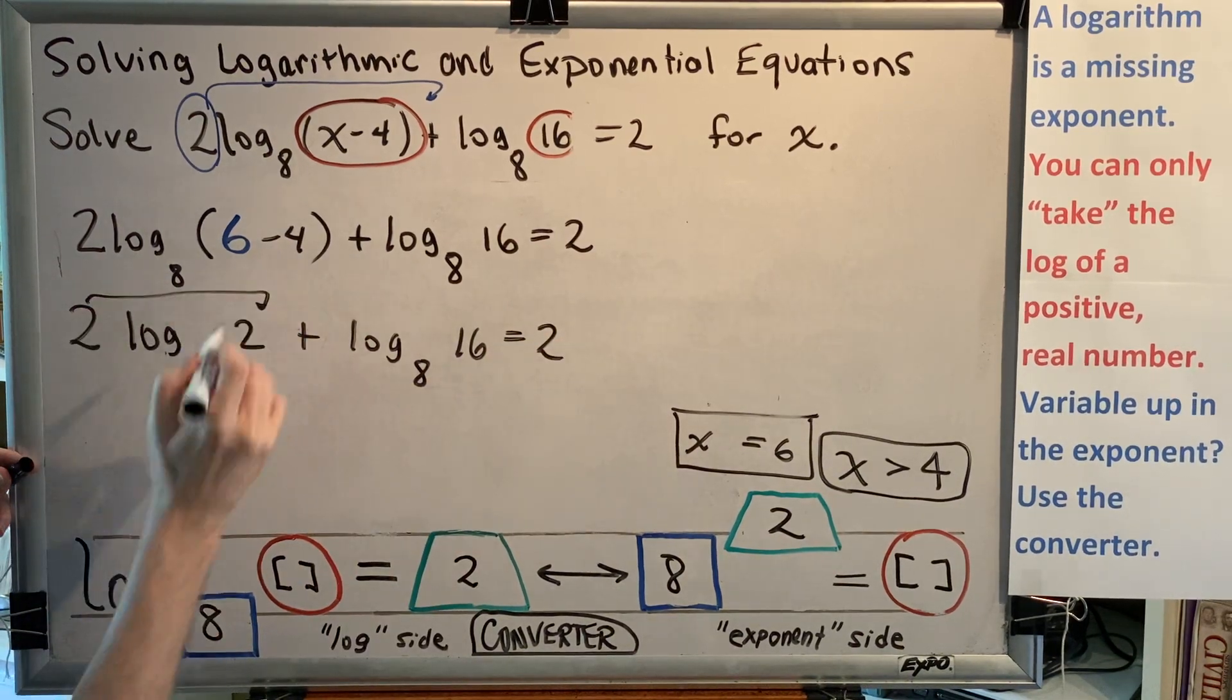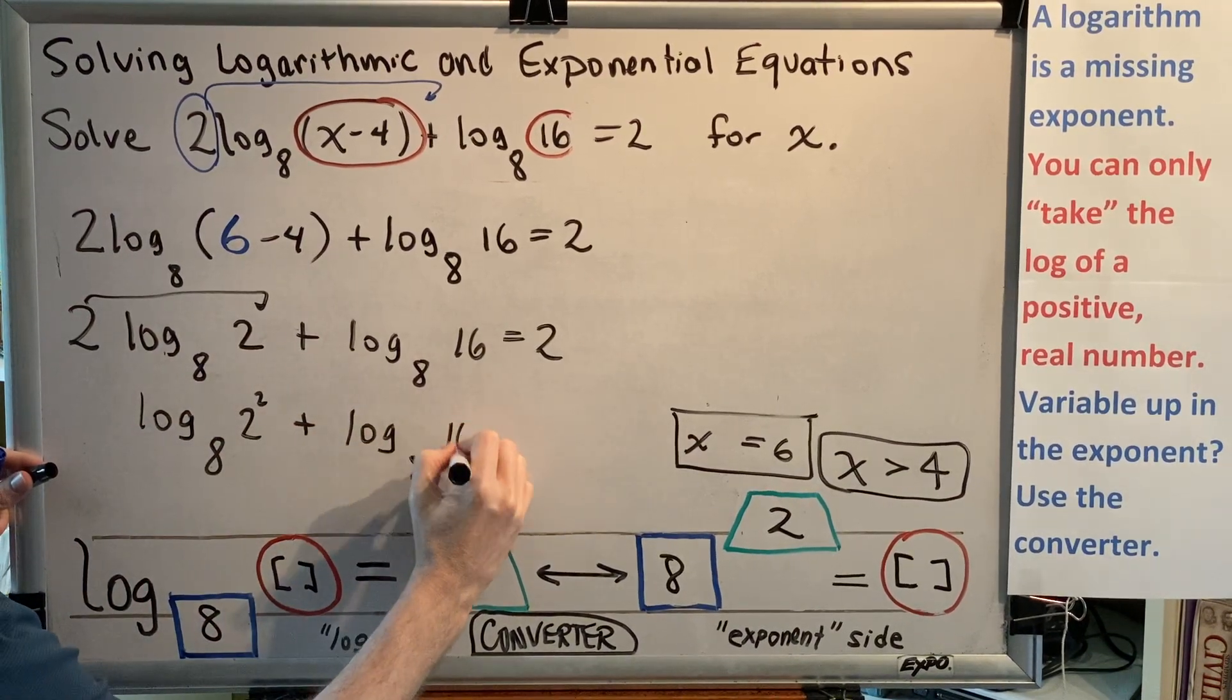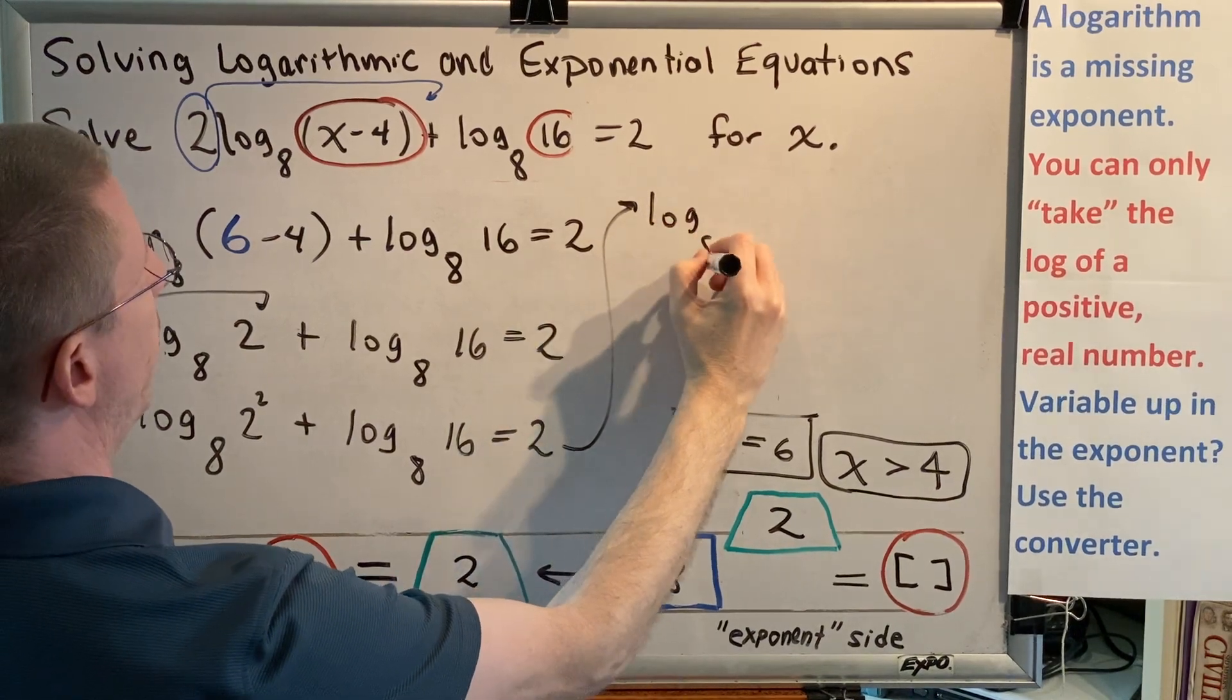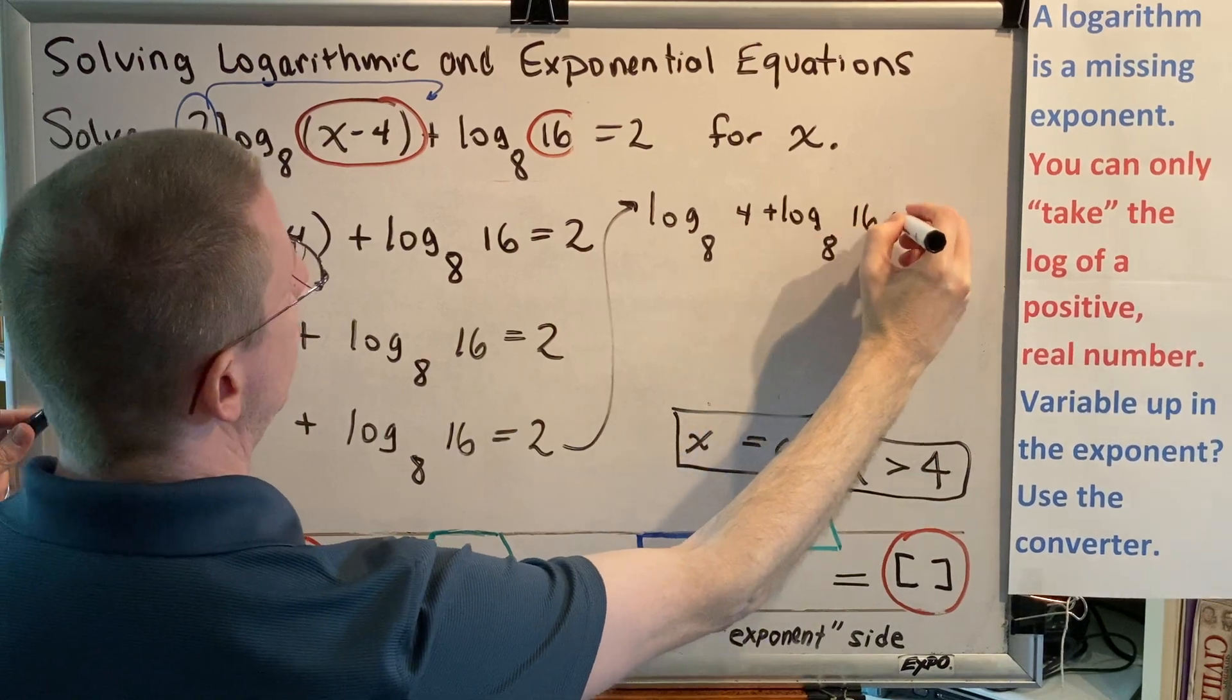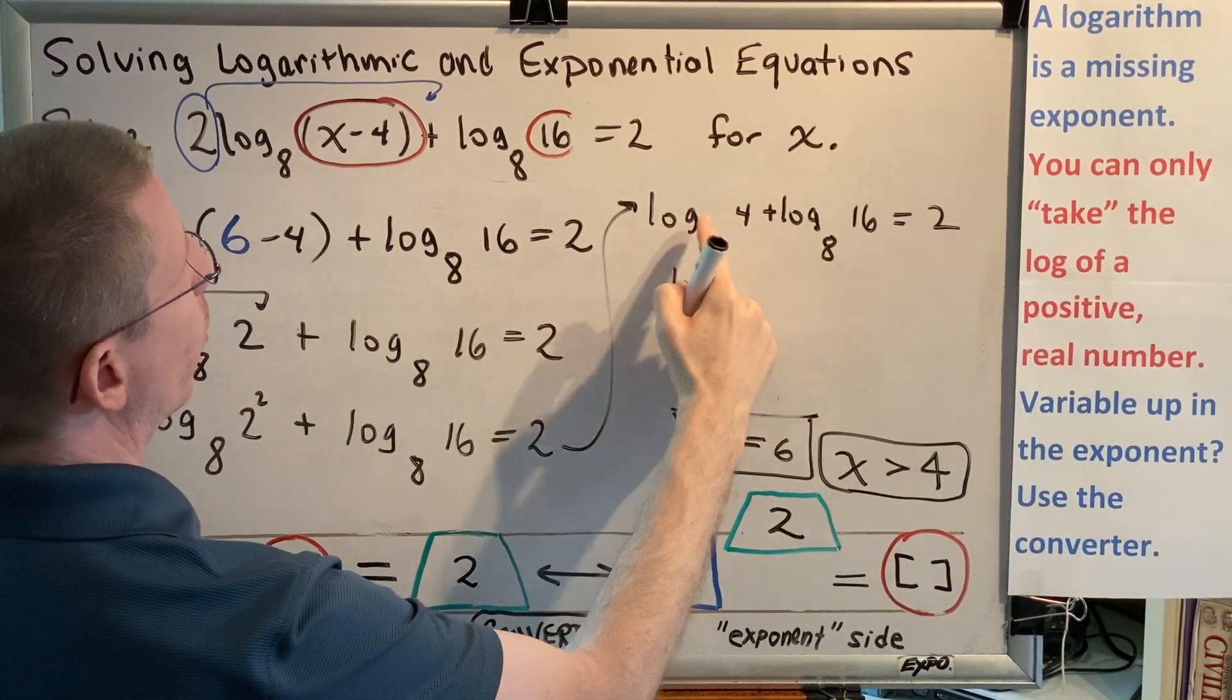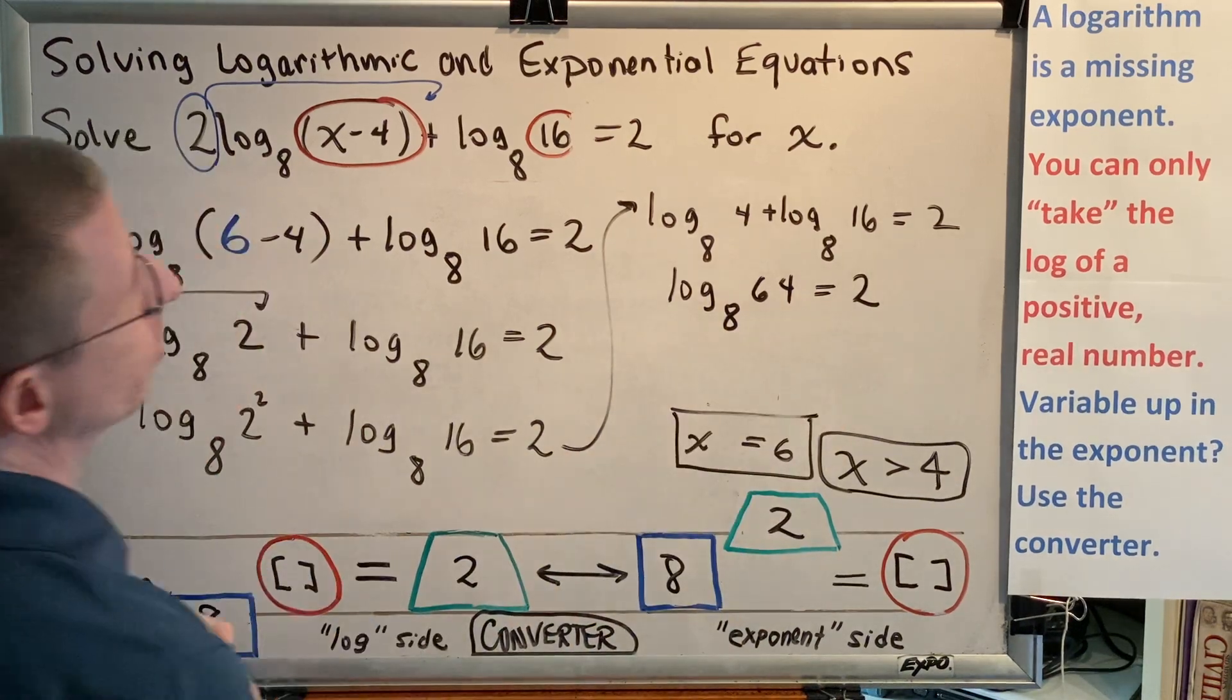Using rule 9, we'll move this 2 over here. And we'll get log base 8 of 2 squared plus log base 8 of 16 equals 2. Of course, 2 squared is 4. So then we have log base 8 of 4 plus log base 8 of 16 equals 2. Two logs with the same base being added. Rule 6 allows me to combine them into one log by multiplying the two arguments. And 4 times 16 is 64. So I get log base 8 of 64 equals 2.